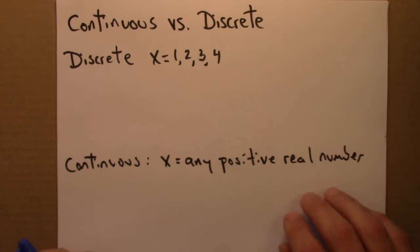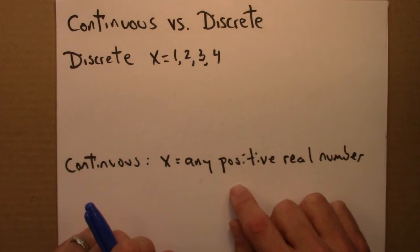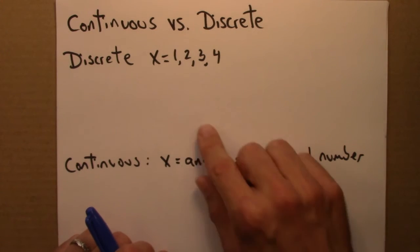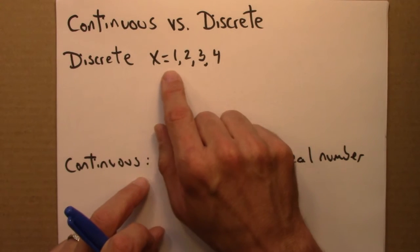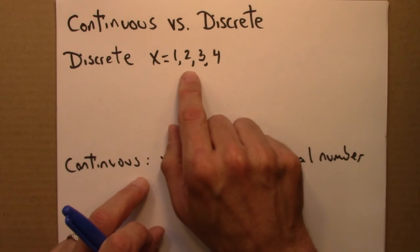So discrete random variable, that's like word frequencies, or the number of tosses it takes for me to throw something out. So there, the outcome x can take on only a discrete set. Let's imagine for simplicity 1, 2, 3, 4.